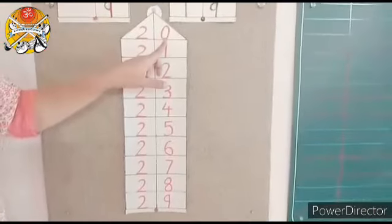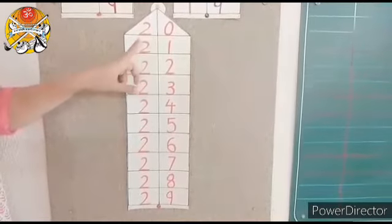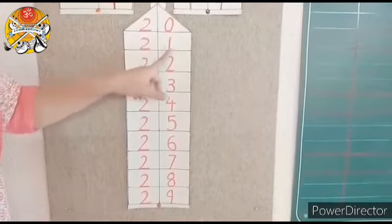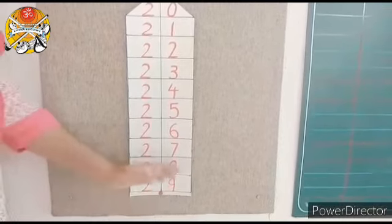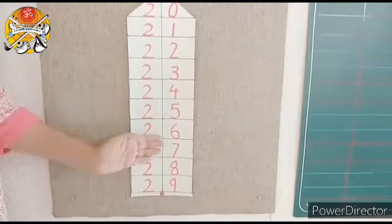And this is house of 20 and from numeral 21 till 29. These are the numerals which come in this house.